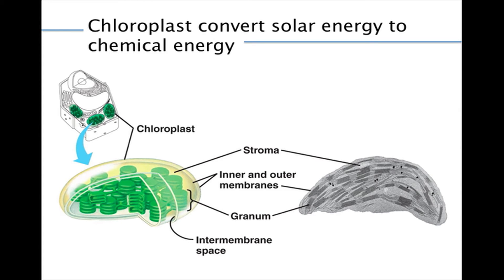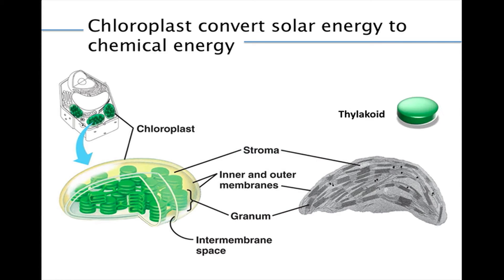Most of the living world runs on the energy provided by photosynthesis — the conversion of light energy from the sun to the chemical energy of sugar molecules. Chloroplasts are the photosynthesizing organelles of all photosynthetic eukaryotes. The chloroplast is enclosed by an inner and outer membrane, separated by a thin intermembrane space. The compartment inside the inner membrane holds a thick fluid called stroma, which contains the chloroplast DNA and ribosomes, as well as many enzymes. A network of interconnected sacs called thylakoids are found inside the chloroplast; the compartment inside the sacs is called the thylakoid space. A stack of thylakoids is called a granum.